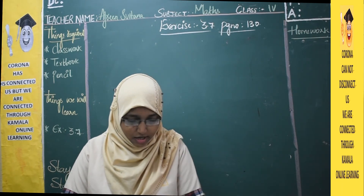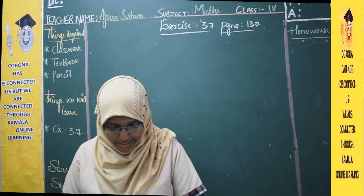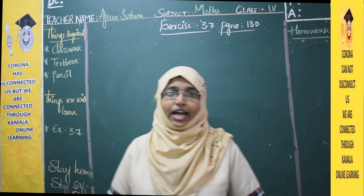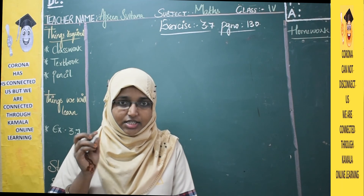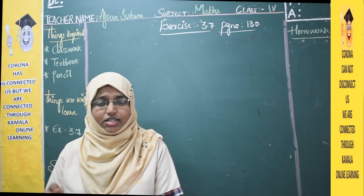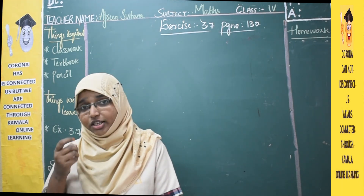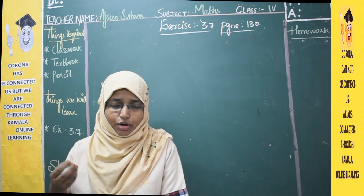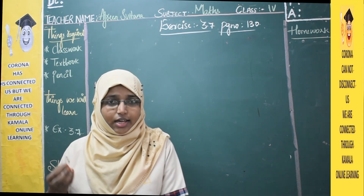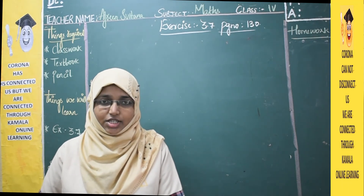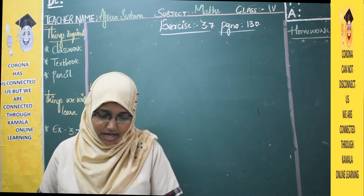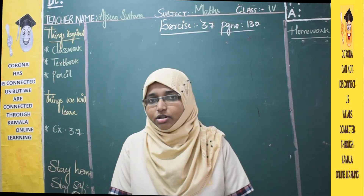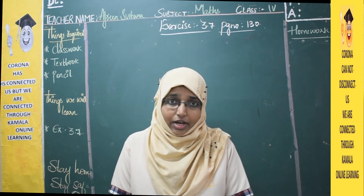Now let us move to exercise 3.7. Same as our previous exercise which was based on addition — where we solved problems like buying a TV, number of sheets, English newspapers, factory manufactured — the same way, the next exercise 3.7 is completely based on subtraction.